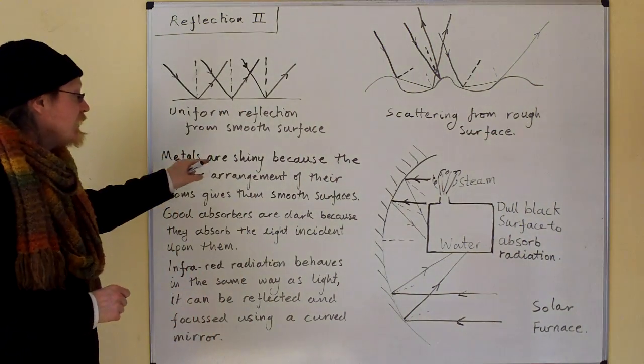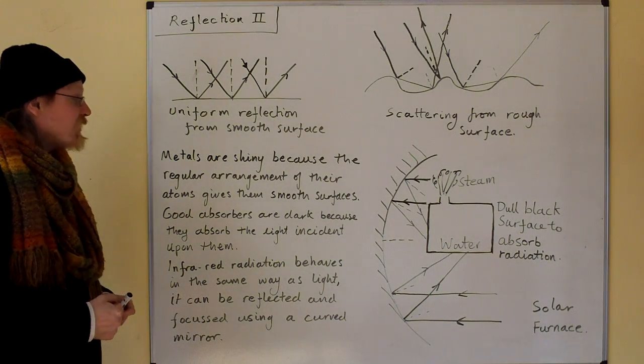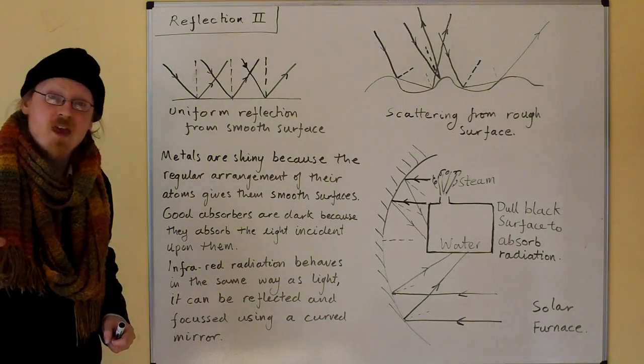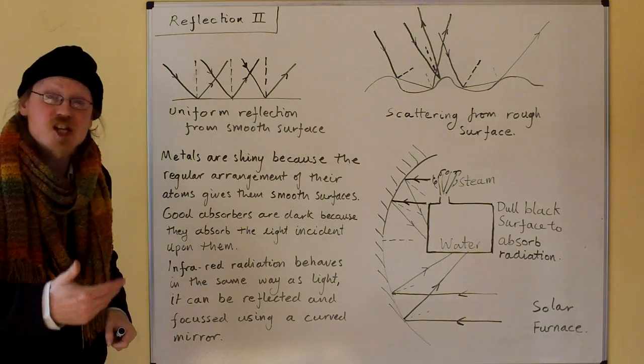Now, metals are shiny because the regular arrangement of their atoms gives them smooth surfaces. So you get uniform reflections, which is what the shininess is.